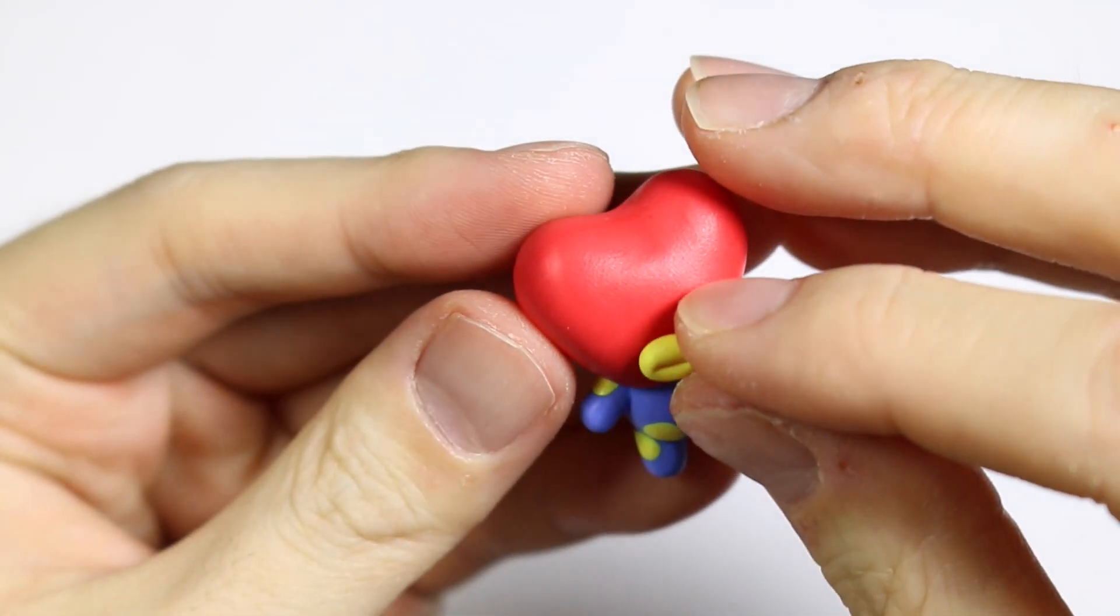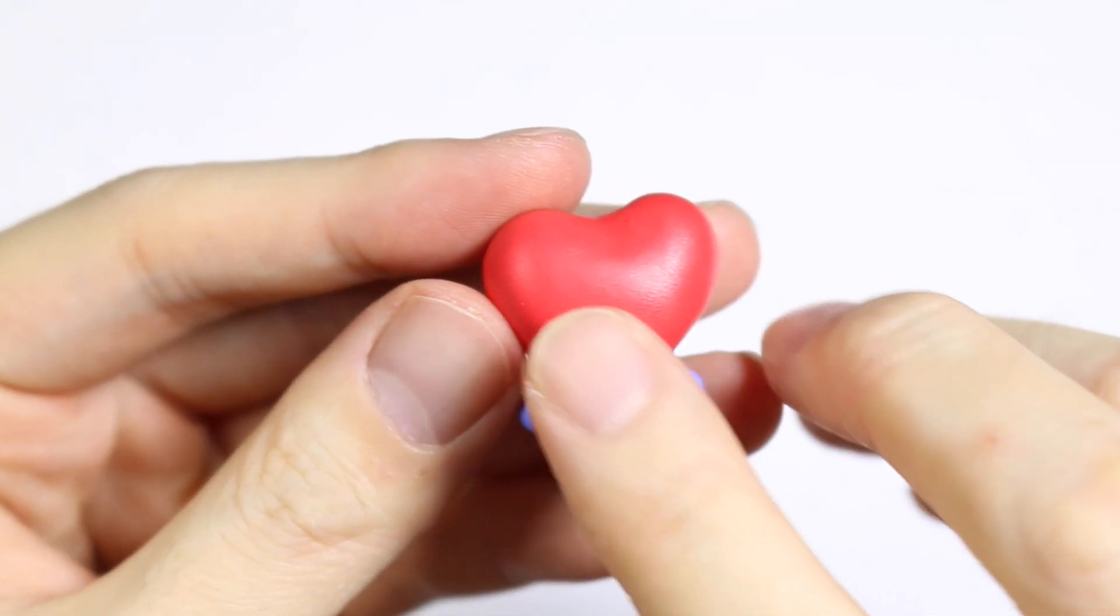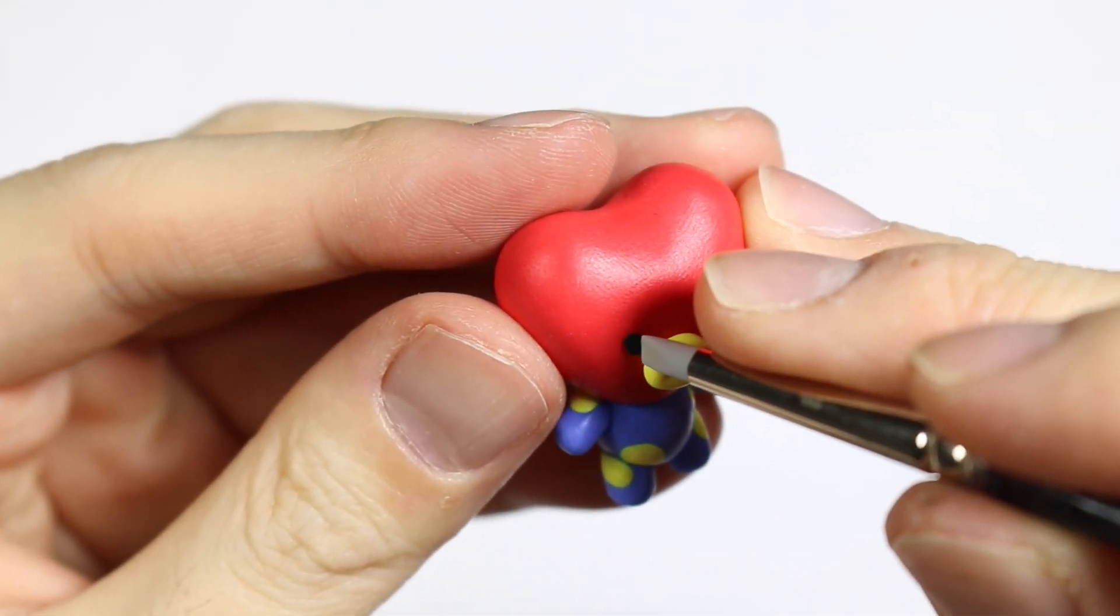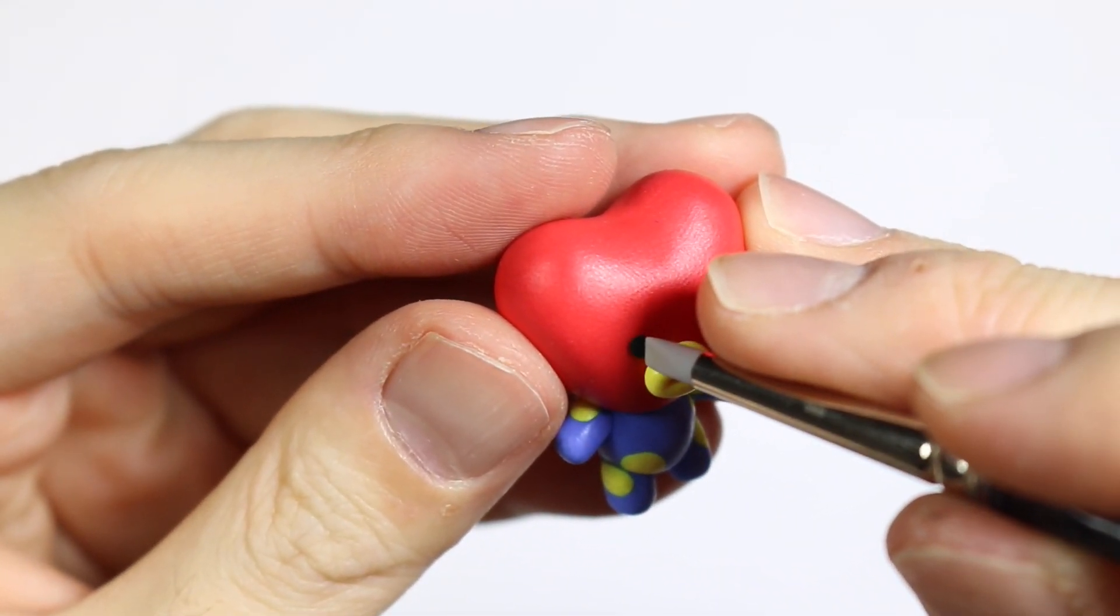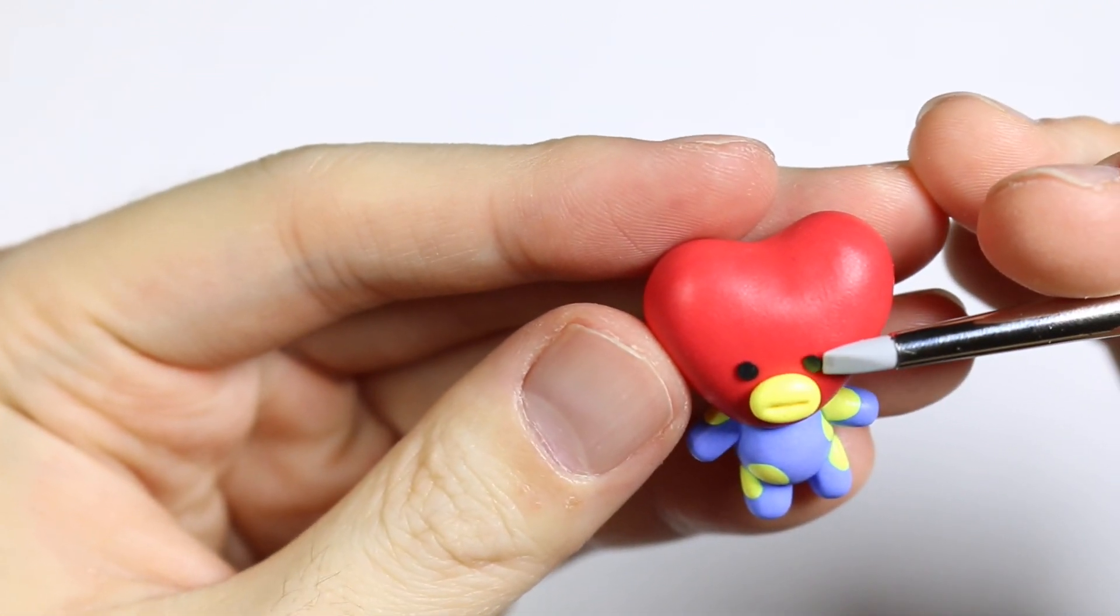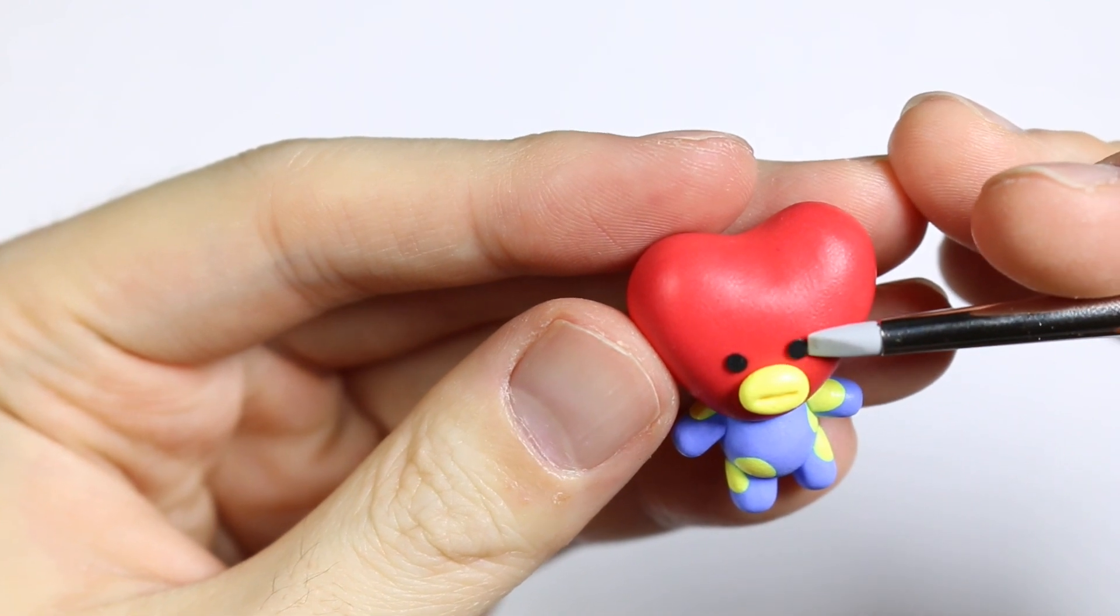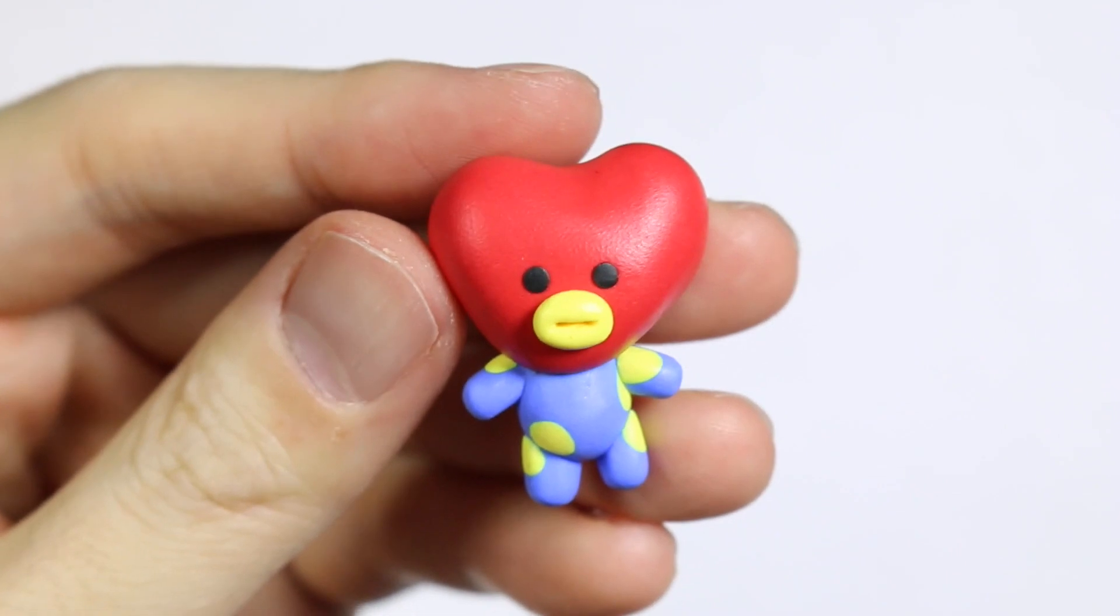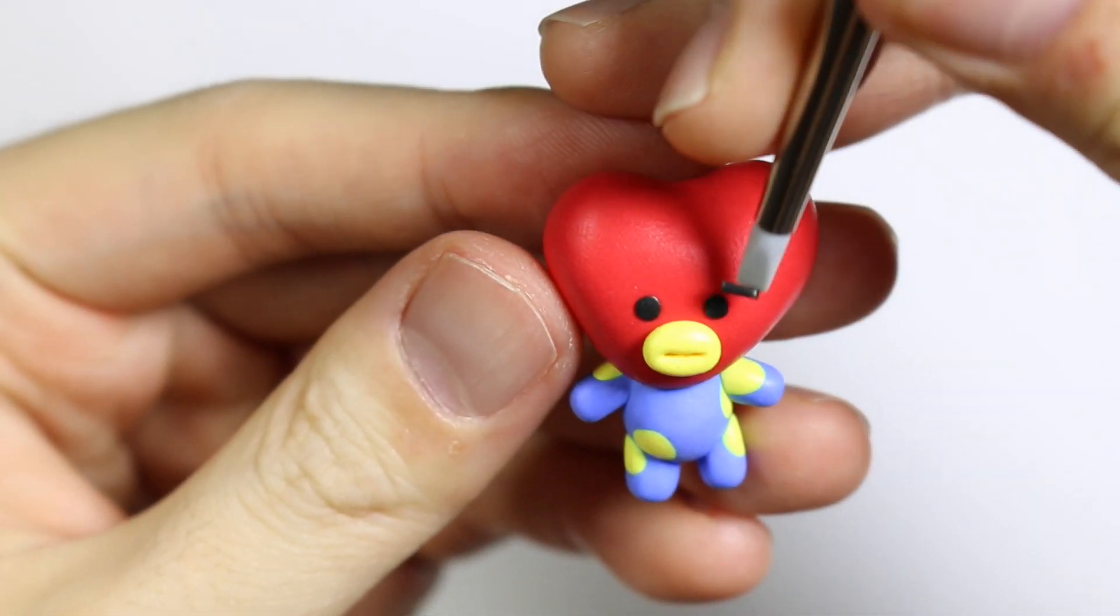And then we're going to add the mouth onto the face along with two dot eyes and two rectangular eyebrows.